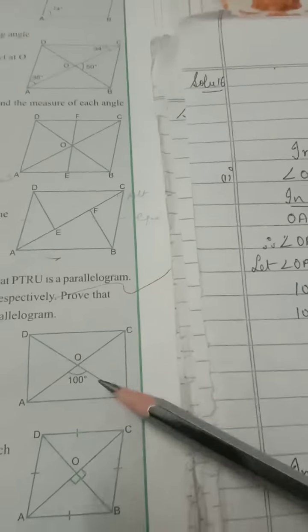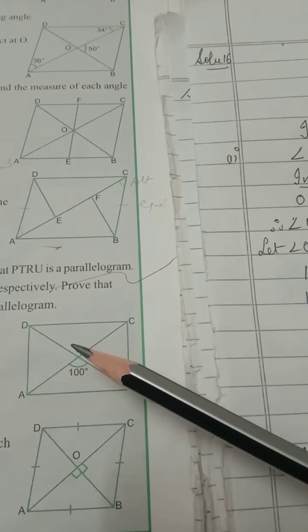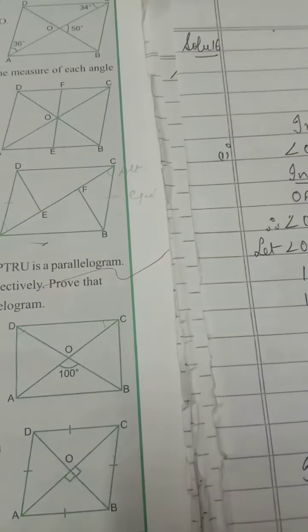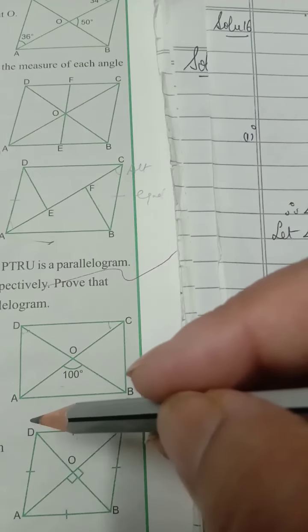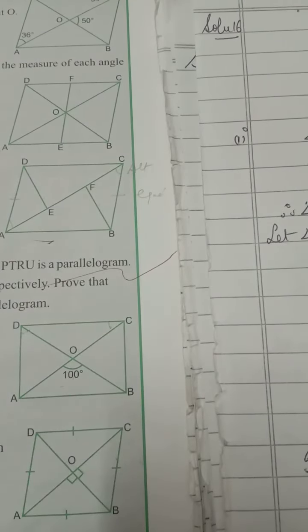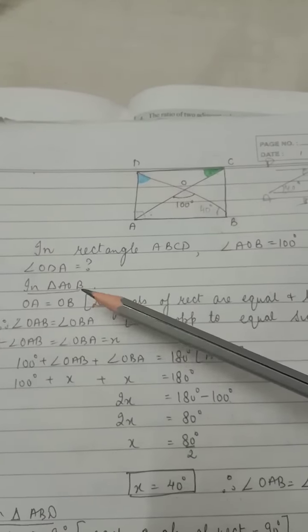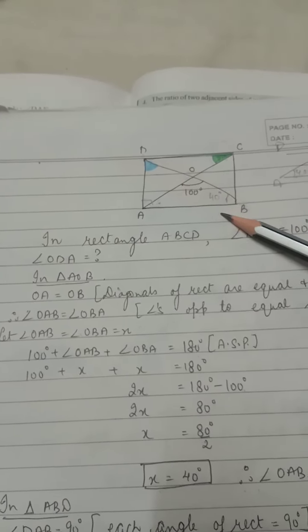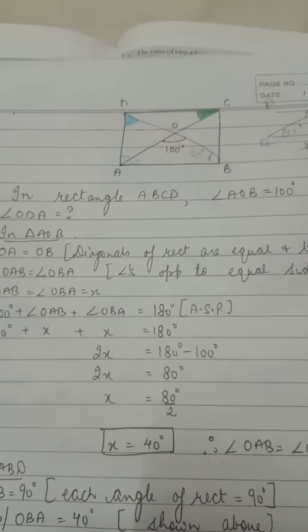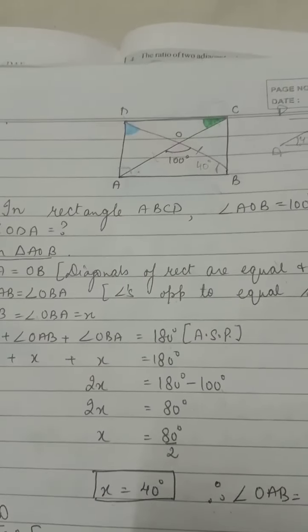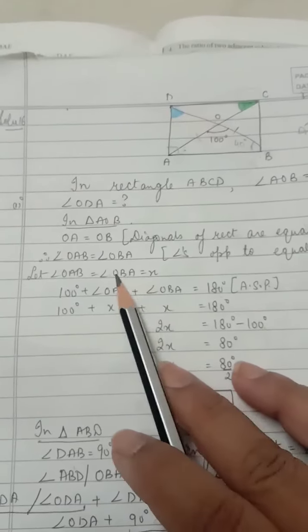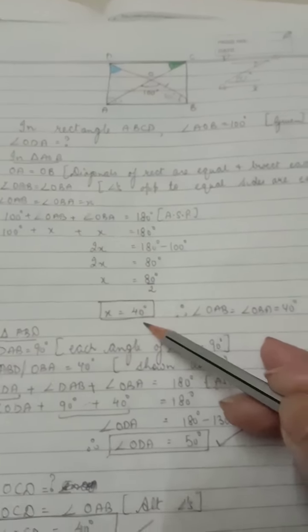Question 16: the figure shows a rectangle with diagonals intersecting at O and angle AOB = 100°. In triangle AOB, since diagonals of a rectangle bisect each other, OA = OB, making it an isosceles triangle with equal base angles. Taking them as x: x + x + 100° = 180°, giving x = 40°. So angle OAB = angle OBA = 40°.